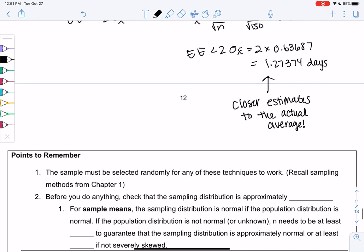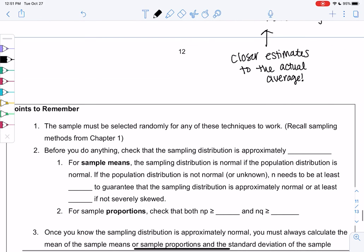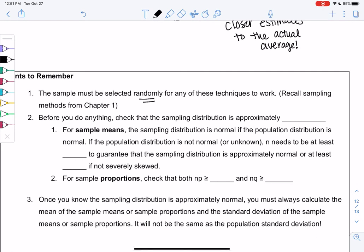The points of this chapter: the sample must be randomly selected for any of these methods to work. Before we do anything, we're going to check that the sampling distribution is approximately normal. You shouldn't be using the normal curve if you can't use it. This is really going to be our step one in the remaining chapters. If our data doesn't fit the normal pattern, then we're done, we're stuck.